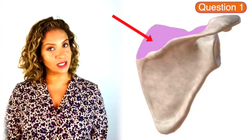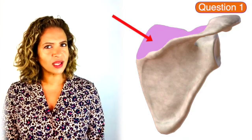What is this bone called and what is the region on this bone called? Which muscle attaches here and what does that muscle do?